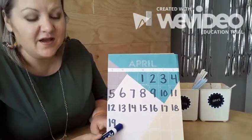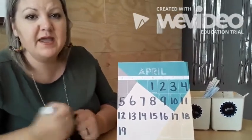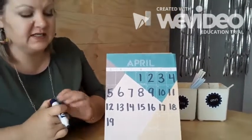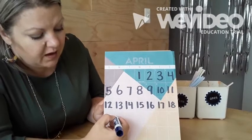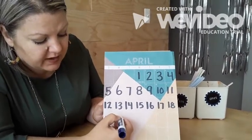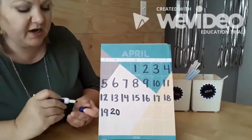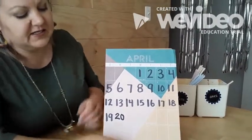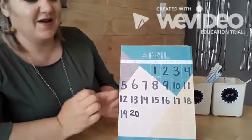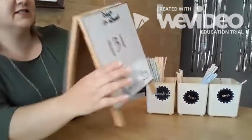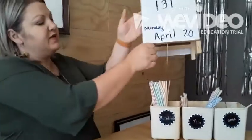20! What two numbers make up the number 20? A 2 and a 0 — very good. Today is Monday, April 20th.